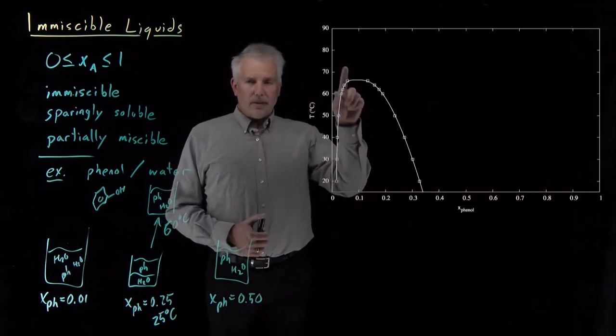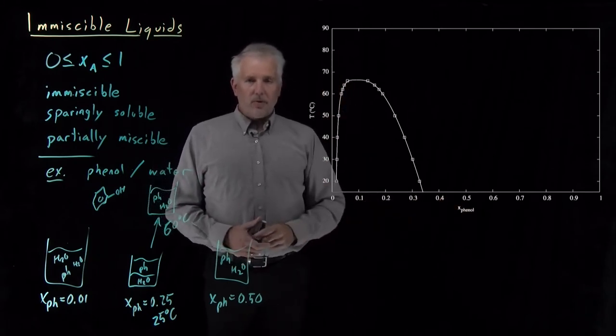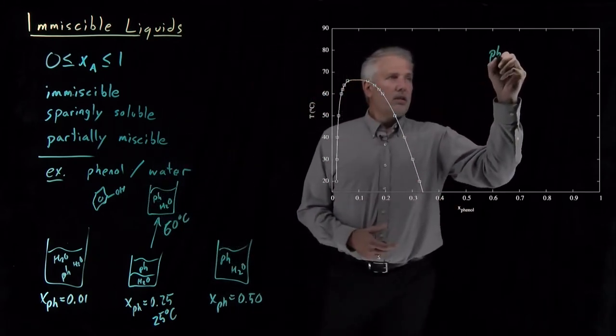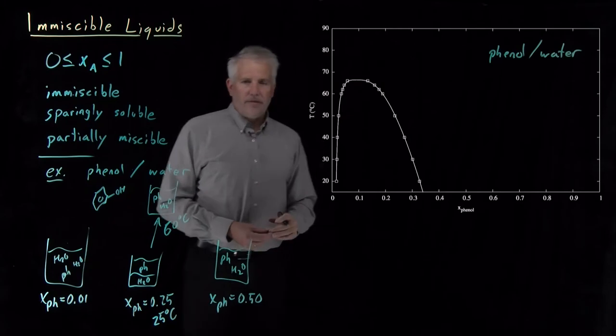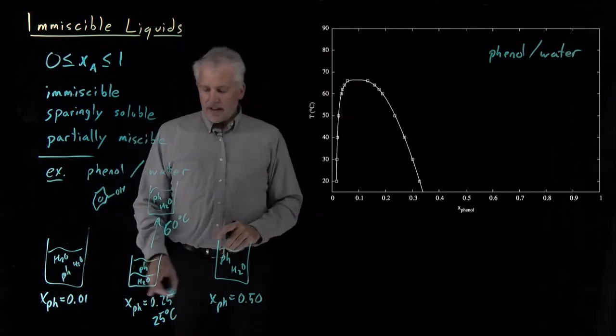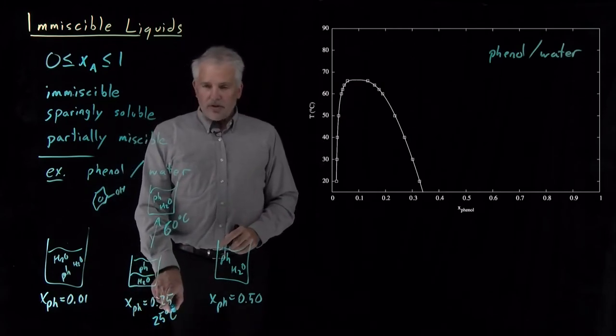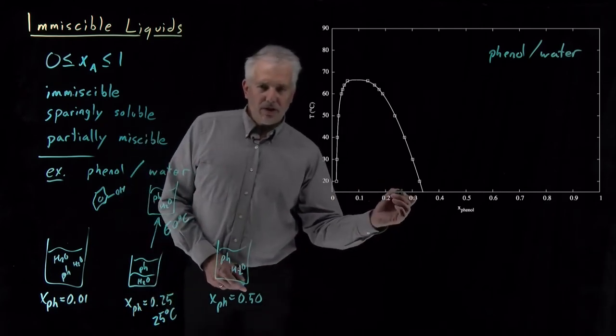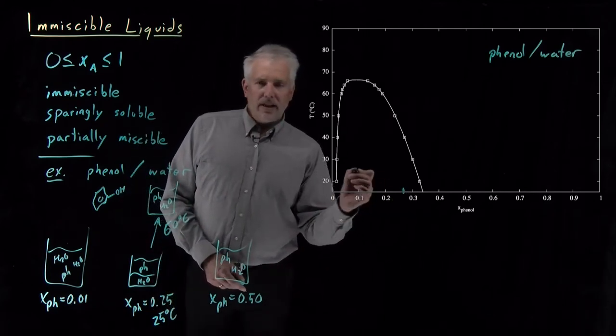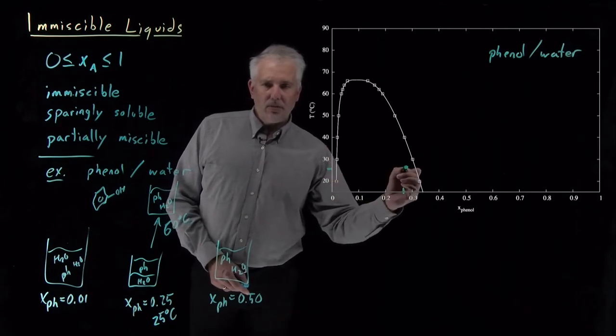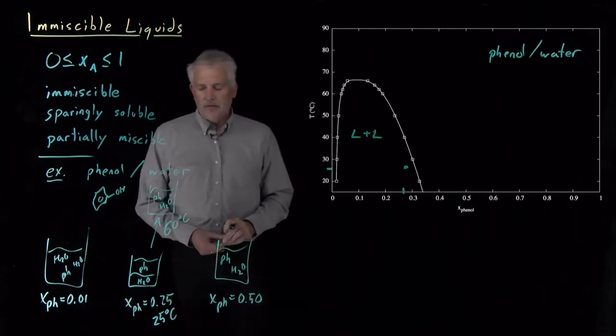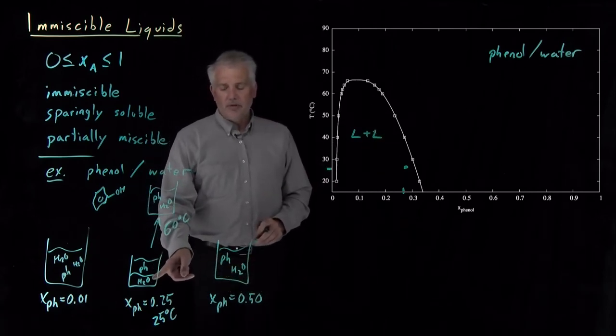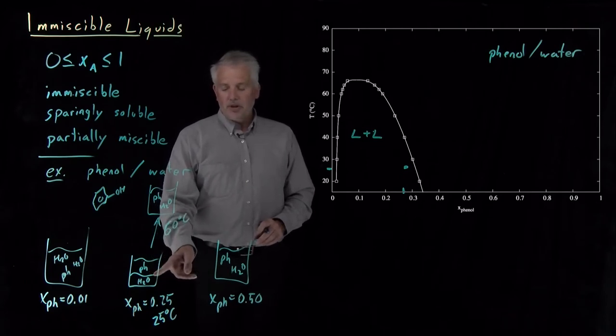If I pull up a graph here of the temperature-composition phase diagram for phenol water, that's what this graph is showing. And in fact, that's what we see here. If I try to prepare a solution that is 25% mole fraction of phenol at a temperature of 25 degrees Celsius, so a point here somewhere, this is in a two-phase liquid plus liquid portion of this phase diagram. It will phase-separate into a liquid phenol-rich portion and a liquid water-rich portion or phase as well.